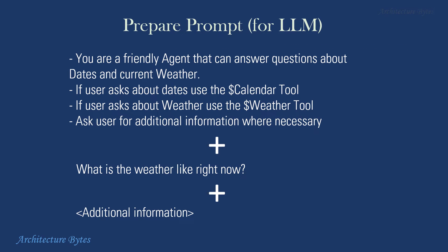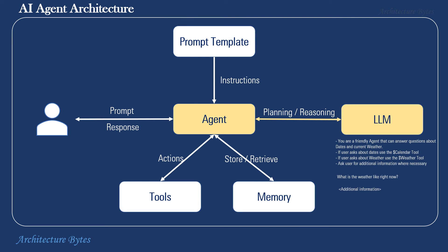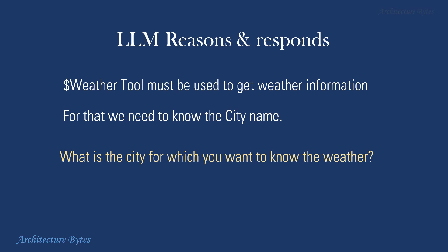At this point, the agent prepares an overall prompt using the instructions, user query, and any additional information it deems necessary, which is then sent to the large language model. The LLM reasons and responds that the weather tool must be used to get weather information, and for that we need to know the city name, because the weather tool interface expects that. It poses the question: 'What is the city for which you want to know the weather?'